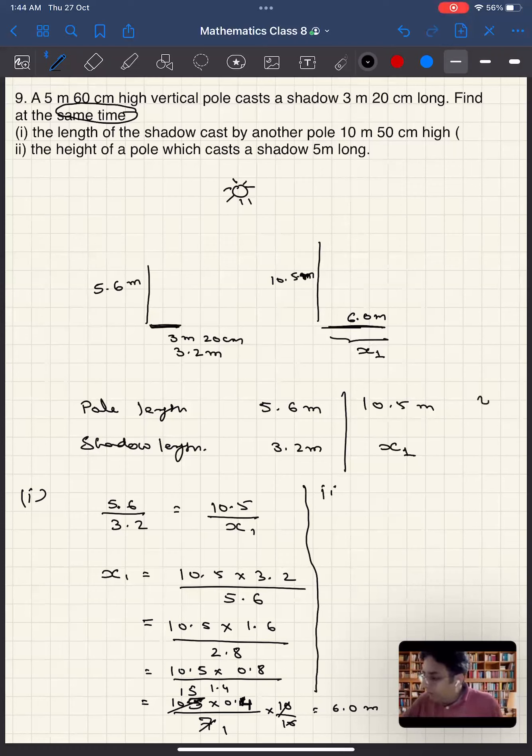Find the height of the pole. So you have to find, let us say, y2, which will cast the shadow of 5 meters. So it will cast a shadow of 5 meters. Again, it will be in the same proportion. So 5.6 divided by 3.2 is equal to y2 divided by 5. So y2 is equal to 5.6 into 5 divided by 3.2.